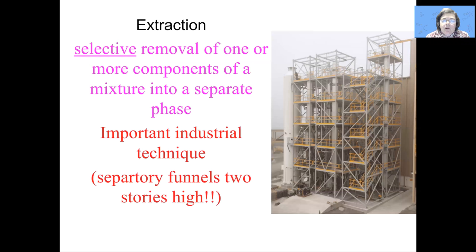Extraction is the selective removal of one or more components of a mixture into a separate phase. This technique can be done on a small scale in the organic chemistry laboratory or on a large scale, as shown here in this five-story extraction setup used in the production of commodity chemicals. It's an important process for the generation of medicinal chemistry compounds such as pharmaceuticals, as well as for agrochemicals and materials.